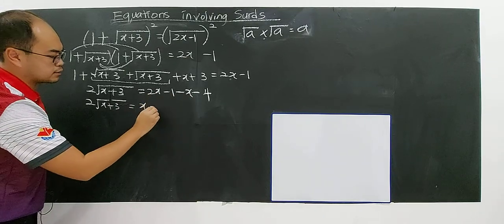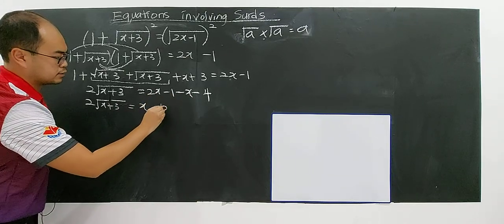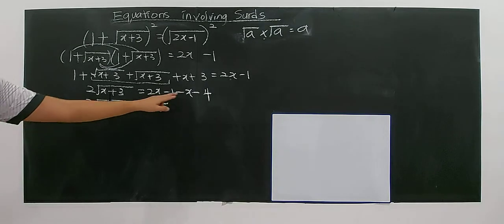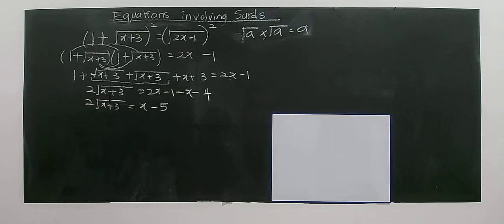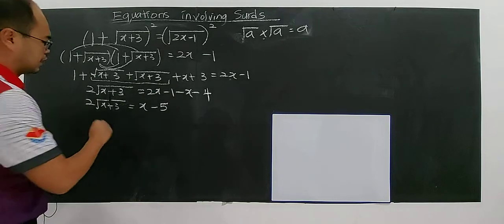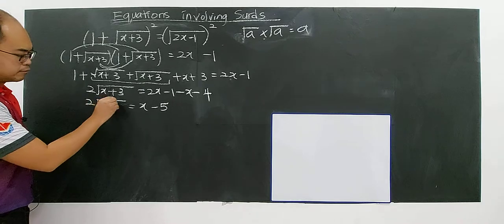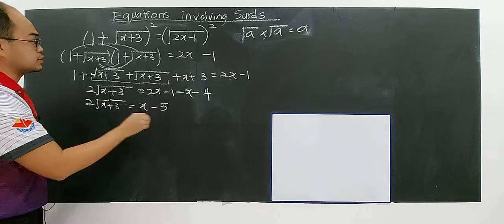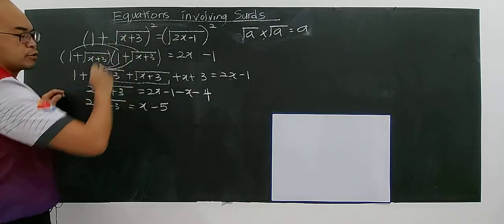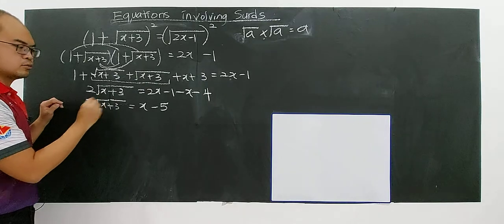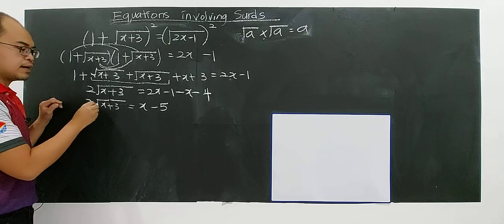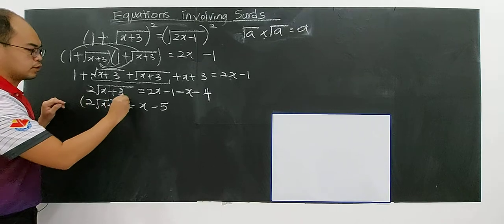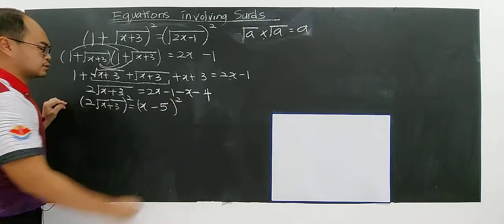2x minus x gives you x. Negative 1, negative 4, you have negative 5. So now you have 2 square root of x plus 3 equals to x minus 5. You now have only 1 surd in the equation. As long as there is still a surd there, you do squaring both sides again — until the surd is gone.